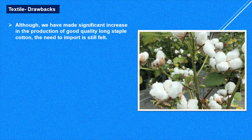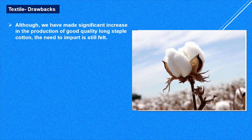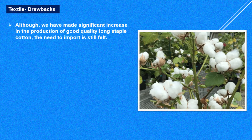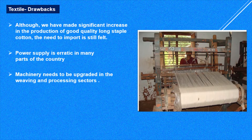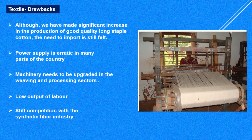When it comes to drawbacks, we have made good progress in production. In India we mainly produce long staple cotton — based on fiber length it is classified as short, medium, and long staple, with long staple being the best. However, the power supply in our country is erratic. Machinery needs to be upgraded as many machines are old and outdated. There is also low output of labor and stiff competition from synthetic fibers from petrochemical industries, like nylon or polyester.